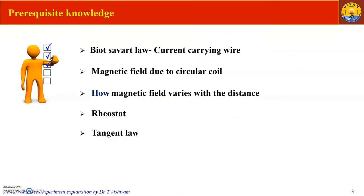To understand this experiment we need some basic knowledge of how magnetic field is produced when current passes through a wire, and also the magnetic field due to a circular coil and how this magnetic field varies with distance in the axial and perpendicular directions, and the working principle — the tangent law.